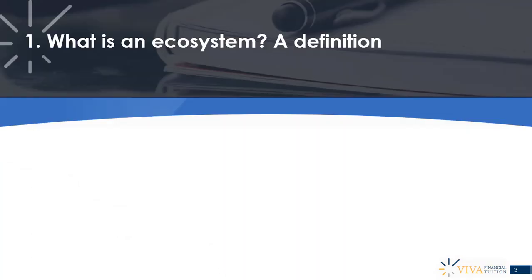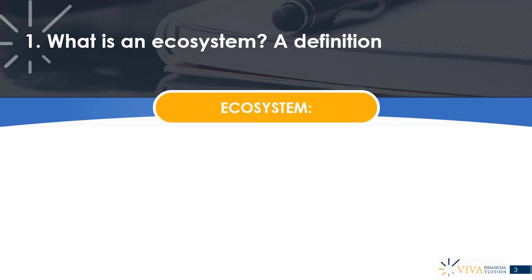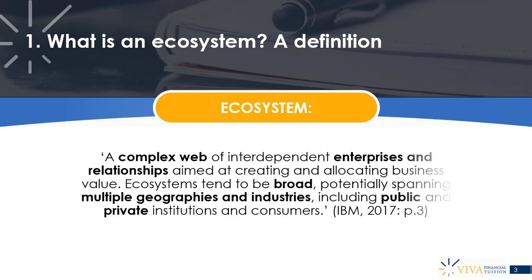We start with a basic question: what exactly is an ecosystem? We're going to look at a basic definition, but don't worry if you don't immediately grasp it — that will become clear as we apply the concept and look at real-world examples. An ecosystem can be defined as a complex web of interdependent enterprises and relationships aimed at creating and allocating business value.